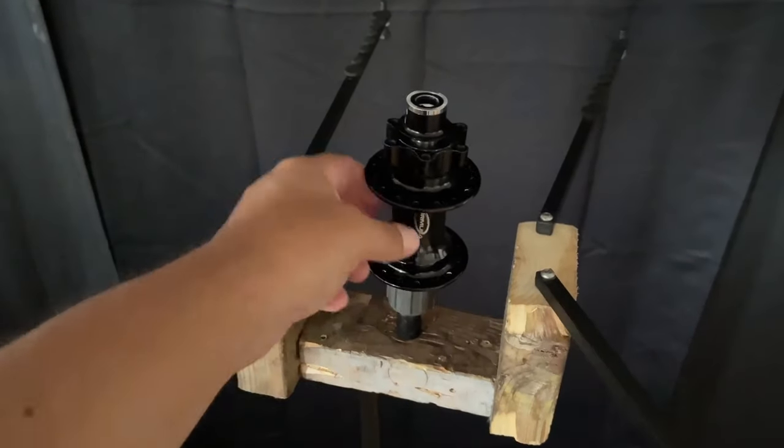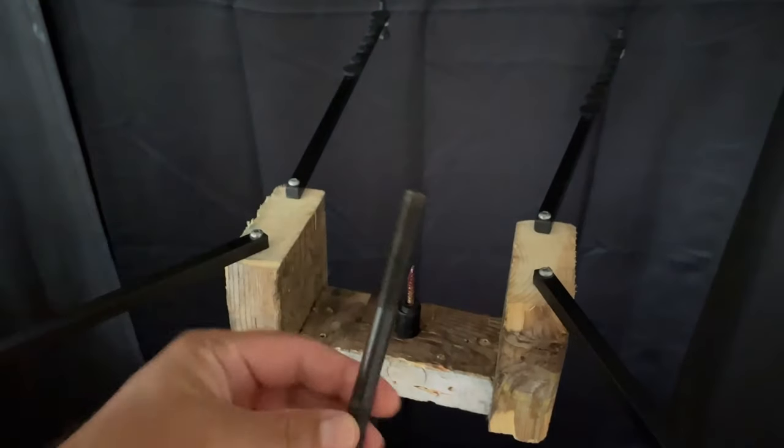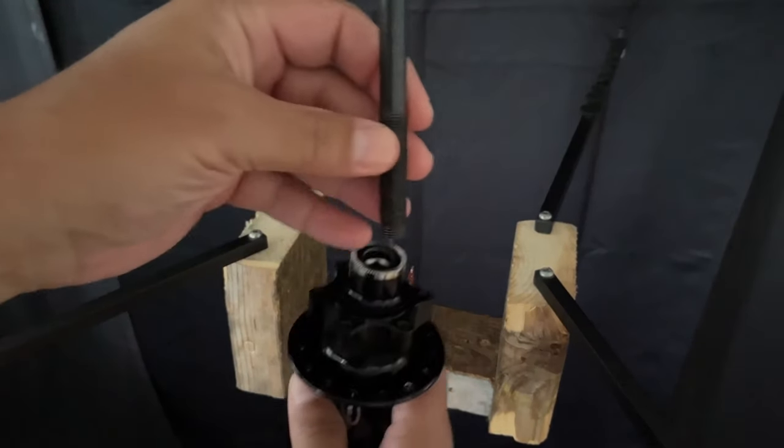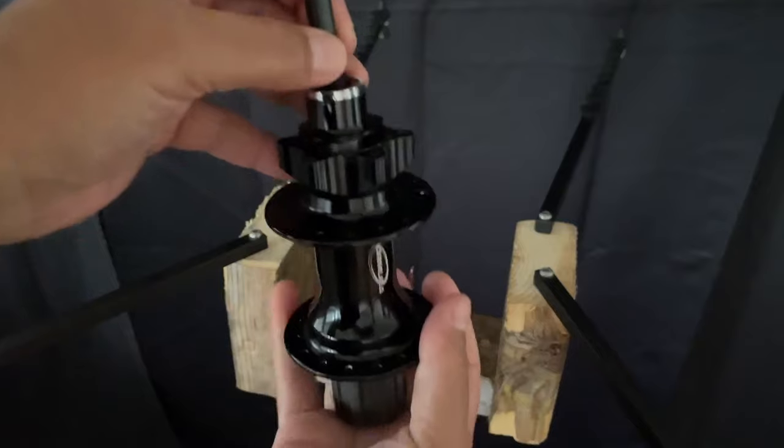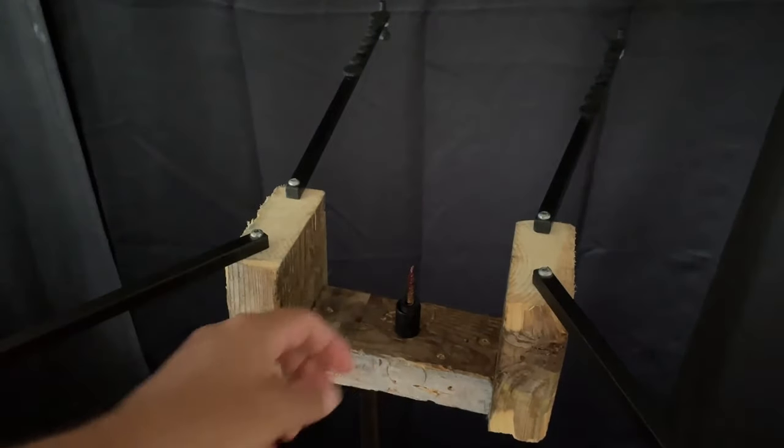So now here's the hub. I'm just going to pull it off. And as you can see, there's a quick release axle. So you just take it off and it's for a rear hub, but still, it doesn't really matter. It's a little bit more narrow than the through axle, the 12 mil through axle itself.